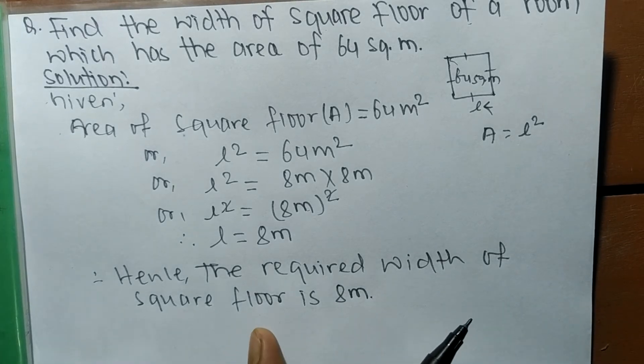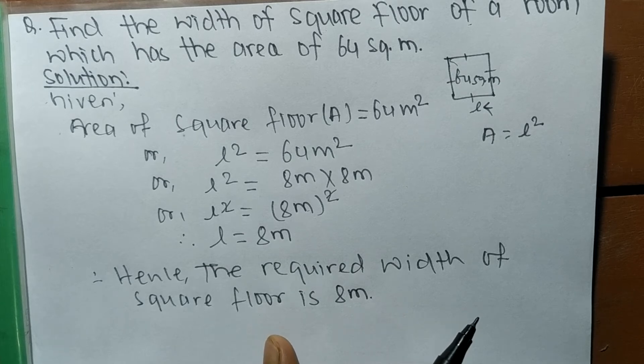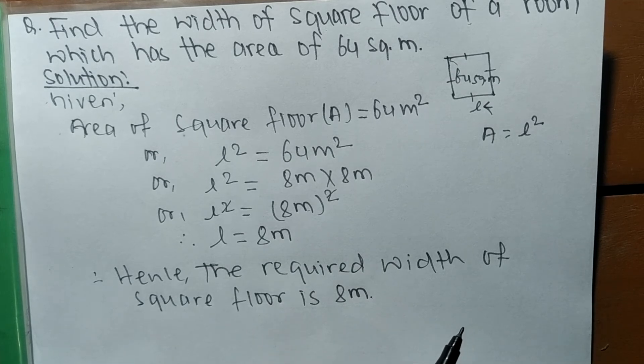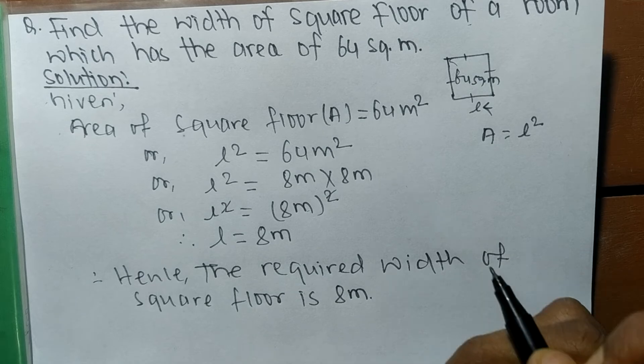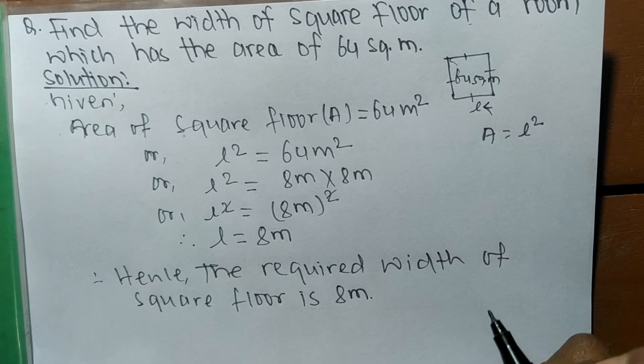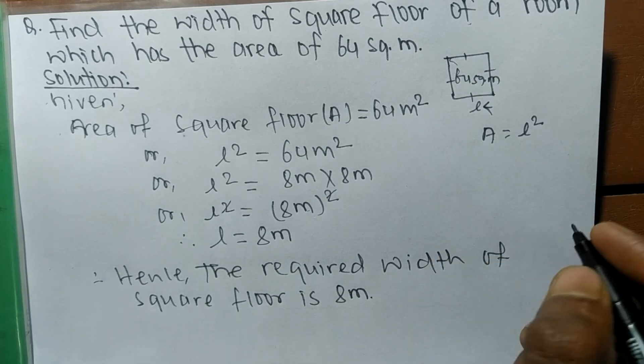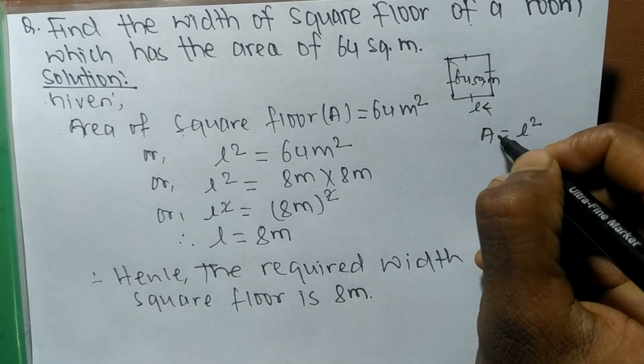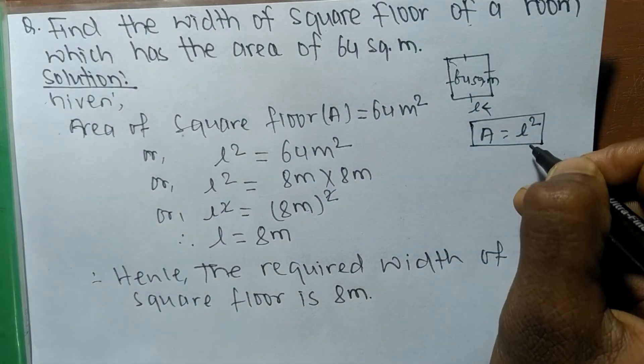So in this way we can solve a problem related to a square or any structure where there is given area and we have to find out its width or length. So it is simple. Area of square means L square.